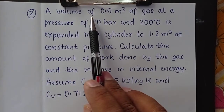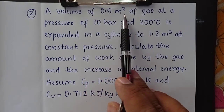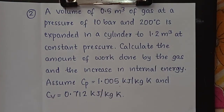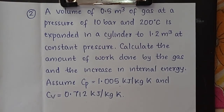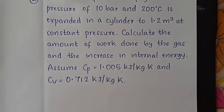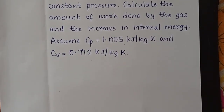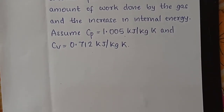A volume of 0.5 meter cube of gas at a pressure of 10 bar and 200 degree centigrade is expanded in a cylinder to 1.2 meter cube at constant pressure. Calculate the amount of work done by the gas and the increase in internal energy. Assume cp equal to 1.005 kilojoules per kg kelvin and cv equal to 0.712 kilojoules per kg kelvin.